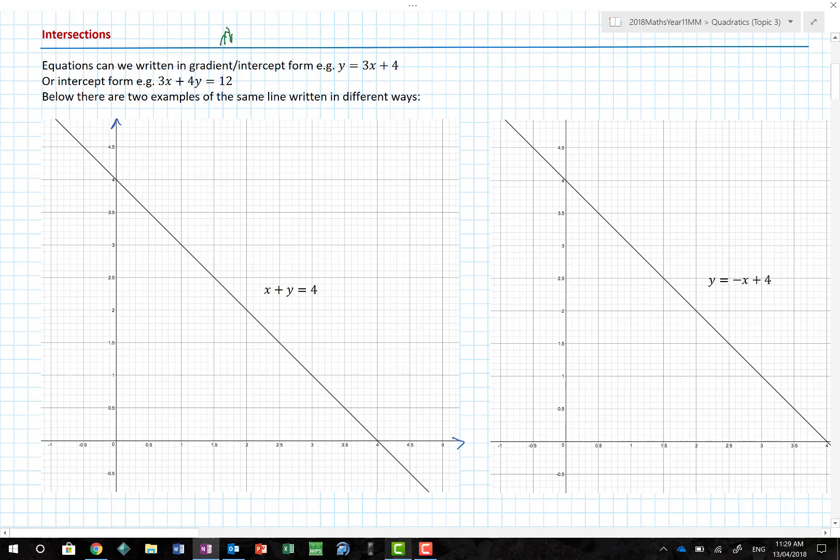Believe it or not, we were finding points of intersection. We were trying to find where these lines cross. Equations can be written in both gradient and intercept form, that's y equals mx plus c. Or it can be written in intercept form, like 3x plus 4y equals 12. Depending on our need, we choose to write equations of straight lines in particular forms.